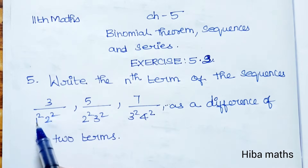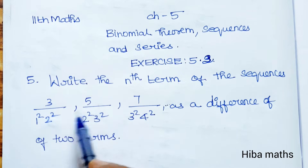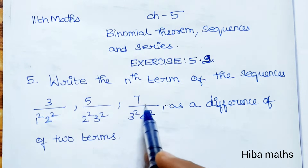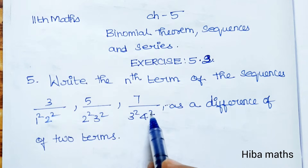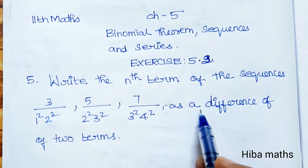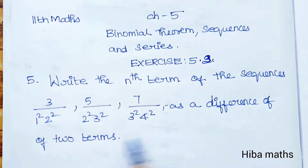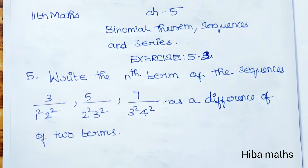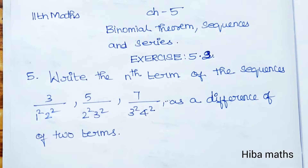The given sequence is: 3/(1²·2²), 5/(2²·3²), 7/(3²·4²). We need to express the general term as a difference of two terms — find the nth term in terms of n.